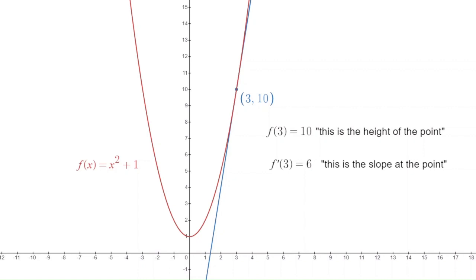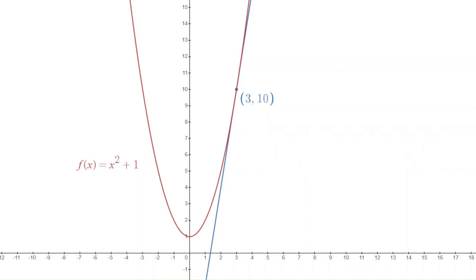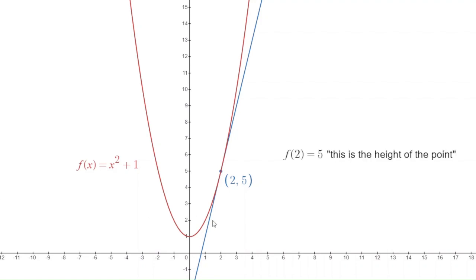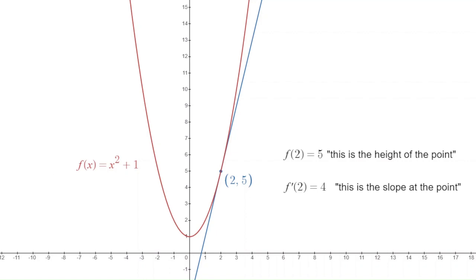If we move the point to (2, 5), the height of the point is 5 — f(2) = 5 — but the slope of the tangent line is actually 4, not 5. So f'(2) = 4, or the derivative of f at 2 is 4. We'll talk about how to calculate these in a little bit.